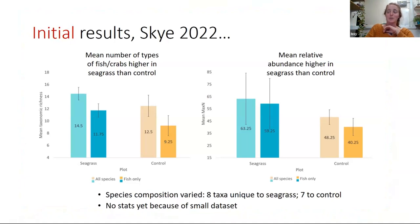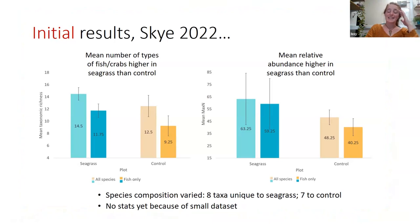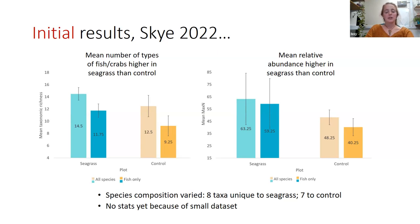Some initial results — I don't have much processed yet, but this is from Skye from last year where I saw the most fish, probably because I visited it latest in the year. The left-hand graph shows that the mean number of different types of fish and crabs was higher in the seagrass than the control site on average, and this is consistent whether you look at all species or just fish. The right-hand graph shows that mean relative abundance was also higher in the seagrass than the control site.